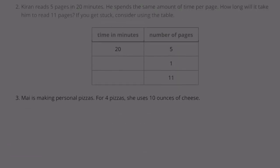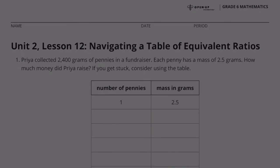Congratulations, you've just completed lesson 2, unit 12: Navigating a table of equivalent ratios.